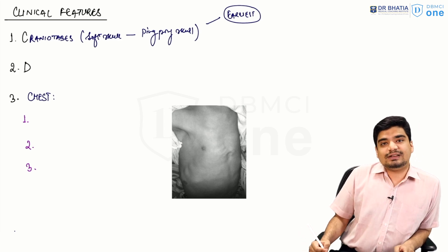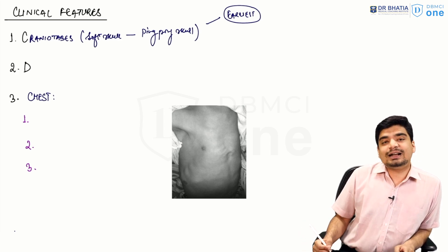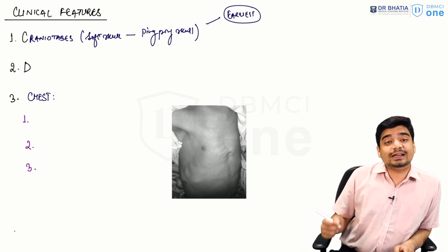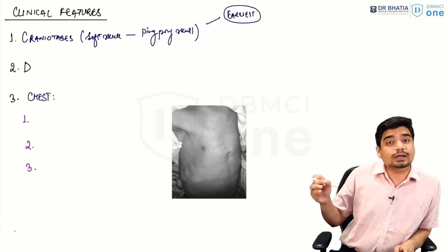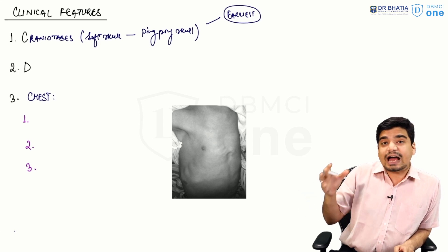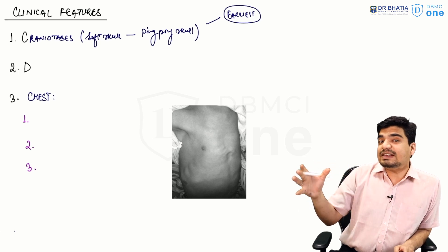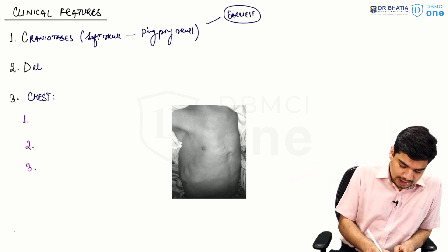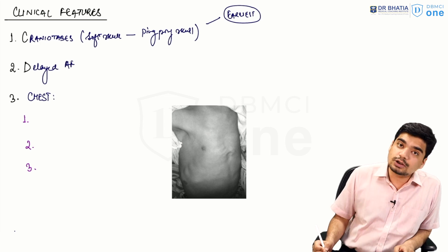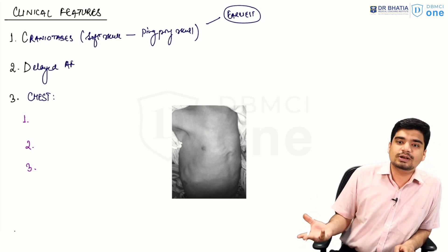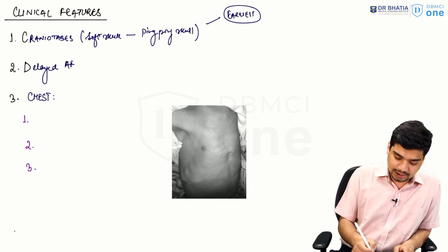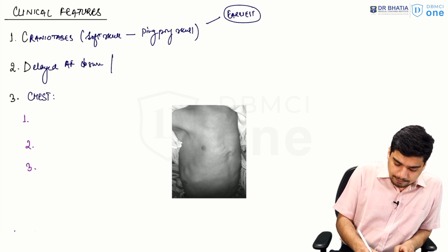The second feature is delayed anterior fontanel closure and widely spaced sutures, which occurs because mineralization is not taking place normally.